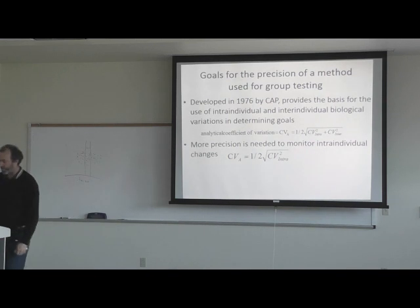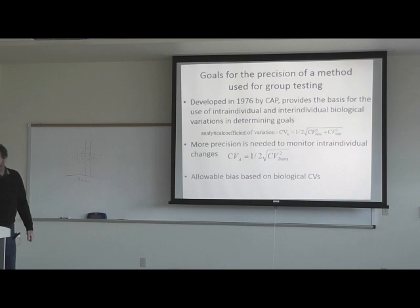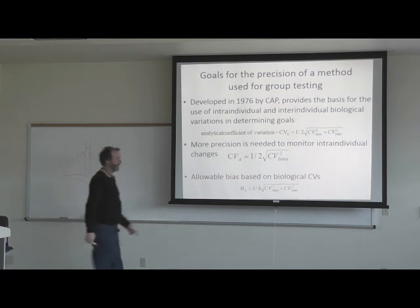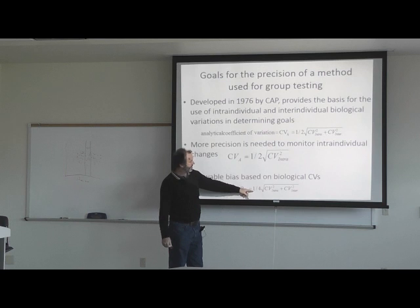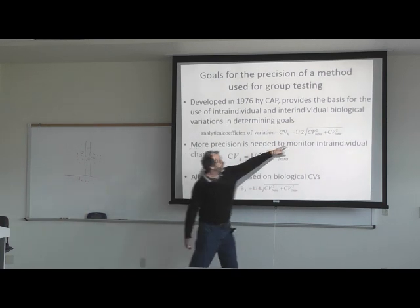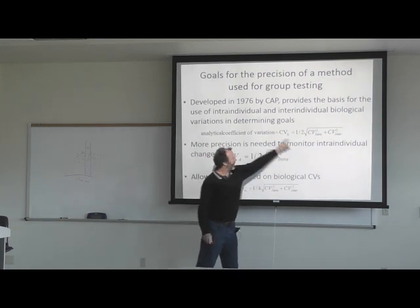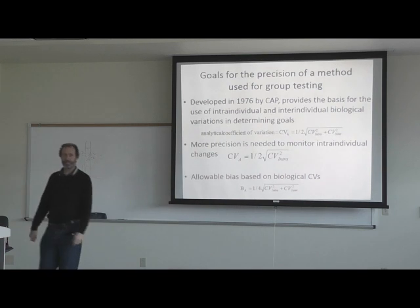The allowable bias based on biological variations — designated BA — is equal to one quarter of the square root of the intra-individual CV squared plus the inter-individual CV squared. If you need more precision for a method, you only look at the intra-individual changes. What is bias? It's a systematic error — the average difference from the true value that the machine has from the real value.